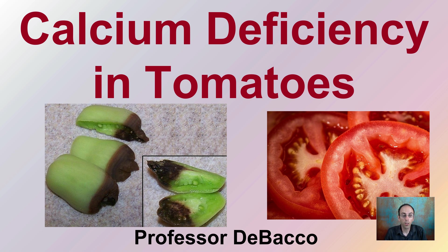Here we're going to be looking at calcium deficiency in tomatoes. In tomatoes, we always want to look for this nice, consistent red color — or in some cases there might be some yellow varieties — seeing that color consistent from the very edge or margin all the way through. However, in calcium deficiency, you can see even at the immature stage there'll be this browning that occurs typically towards the blossom end.